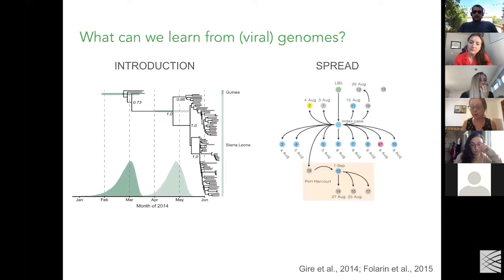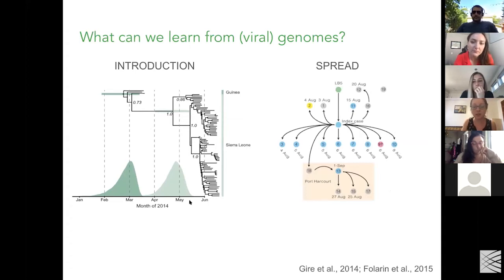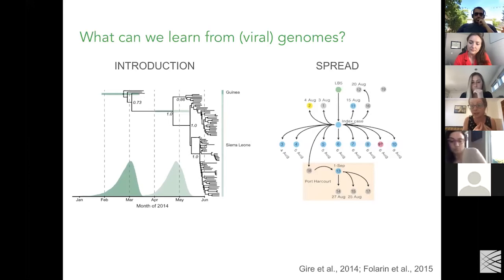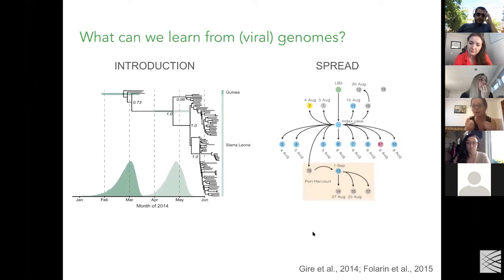I wanted to illustrate this with examples from other work the lab has done — how we can infer introduction (when a virus might arrive somewhere) and how it might be transmitted or spread. These are two examples from Ebola virus. On the left, you have genomes from Sierra Leone and Guinea during the Ebola outbreak. The Sierra Leone ones all cluster together, and by dating the time of that branch point, we could infer when the outbreak arrived in Sierra Leone. On a more granular level, we can also use viral genomes as a way to perform genomic contact tracing — putting genomes together with transmission information to say who may have come into contact with whom and how infection may have spread.